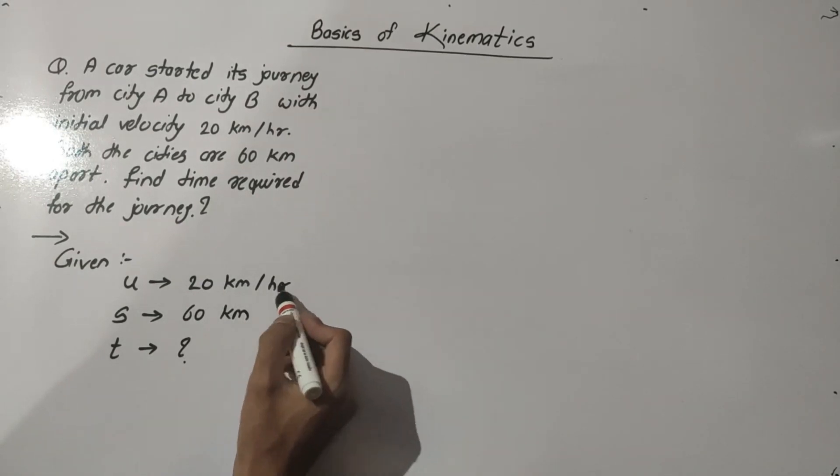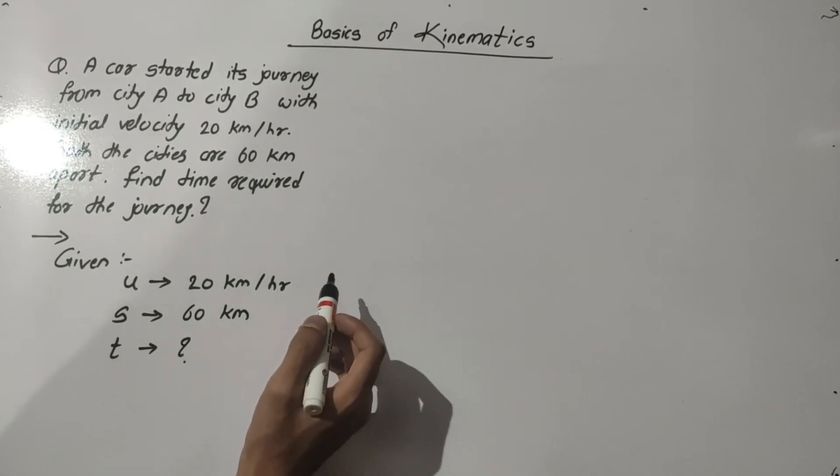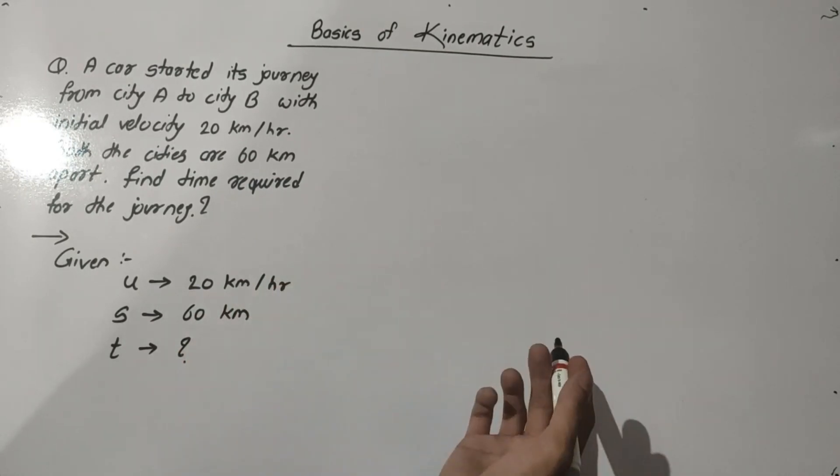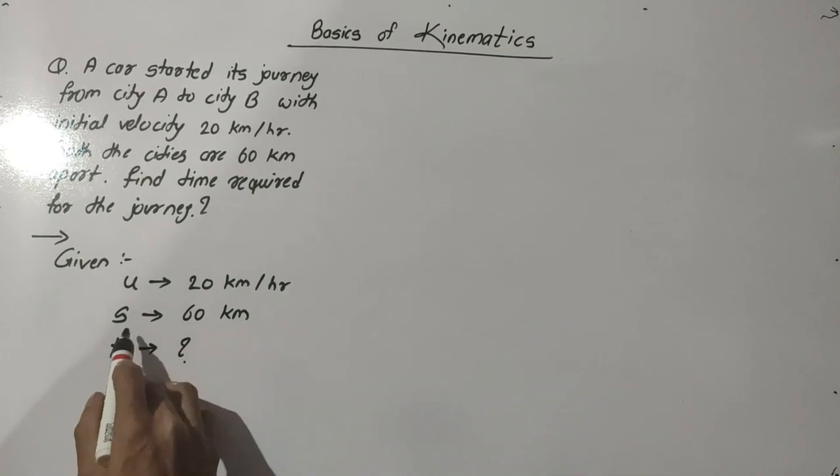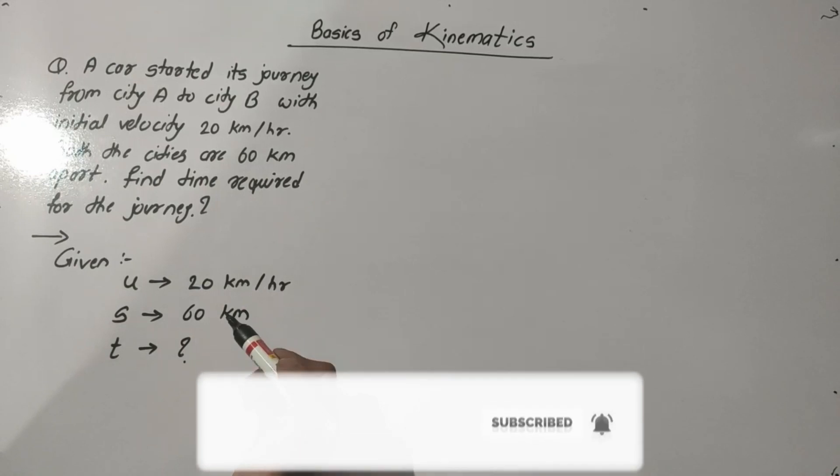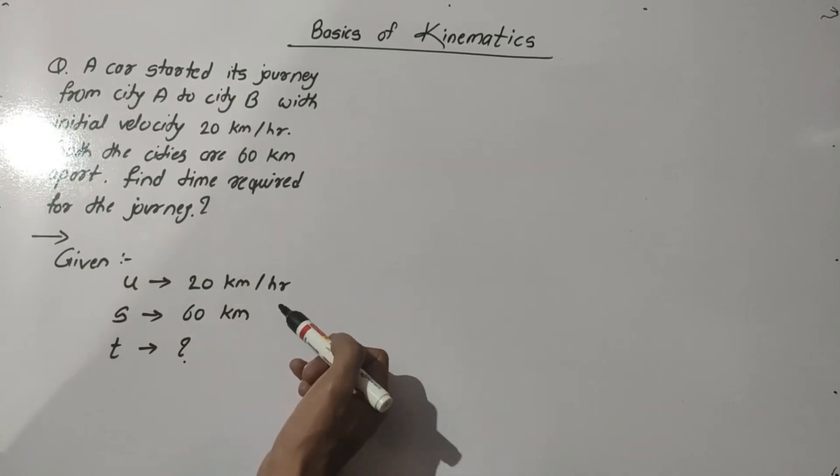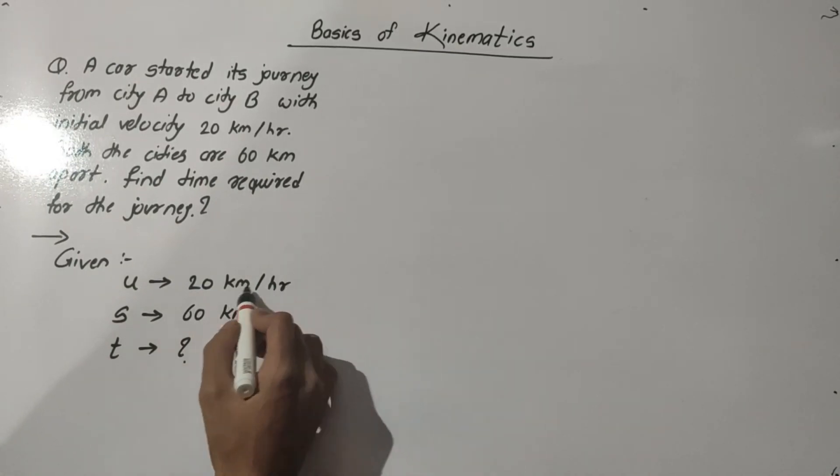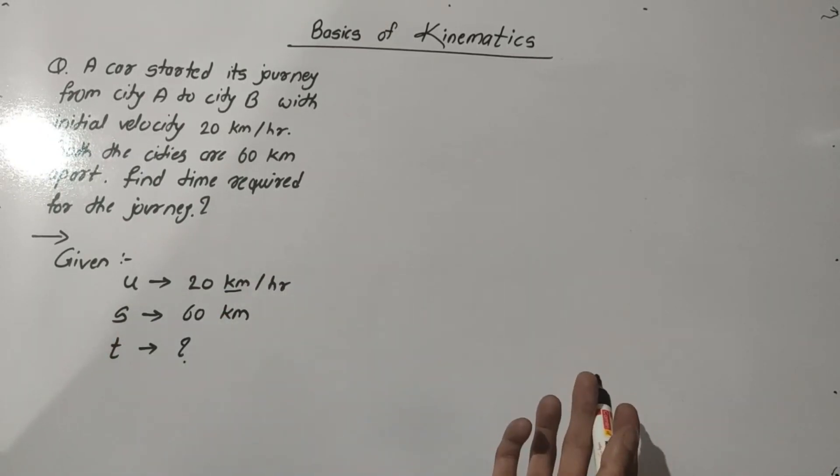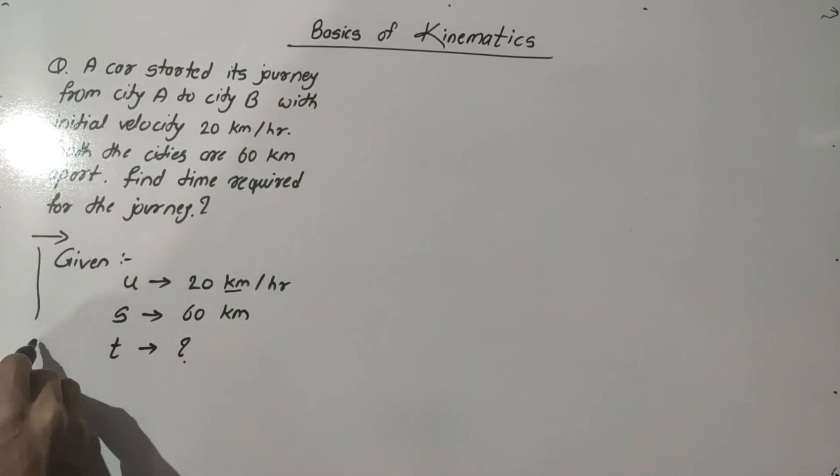If you find difference between the units of velocity and distance, then only the need of unit conversion is there. If you find here 20 meter per second, then you need to convert that into kilometer per hour. If the distance is given in meters, then you need to convert that distance as per the units of velocity. So here both units are in kilometer per hour and kilometer, so there is no need of unit conversion. And also, after writing this data...